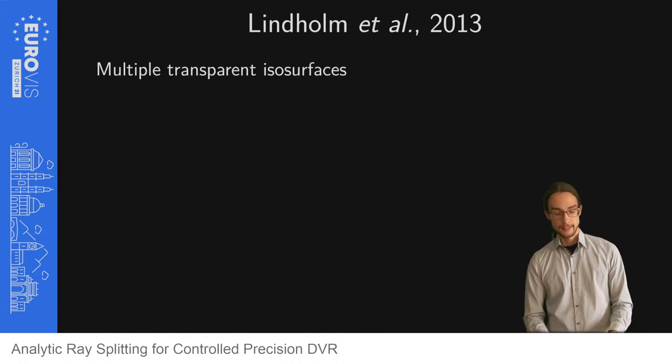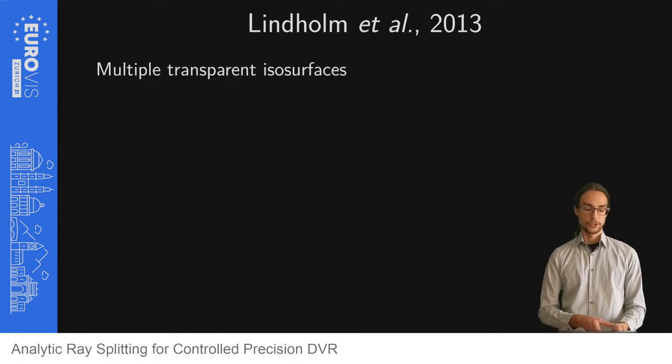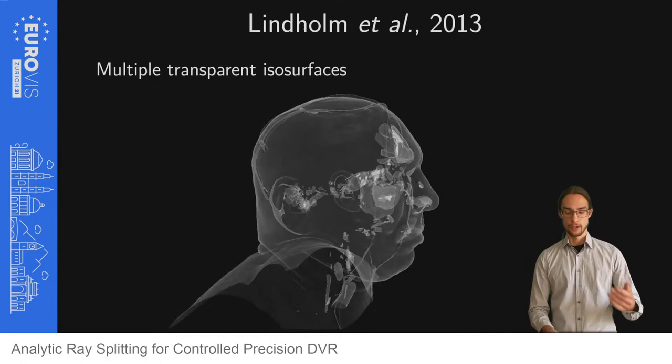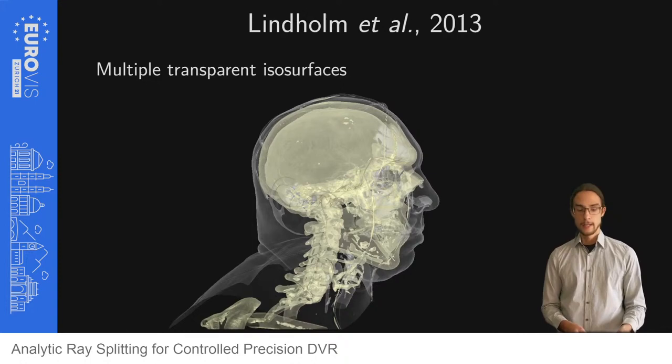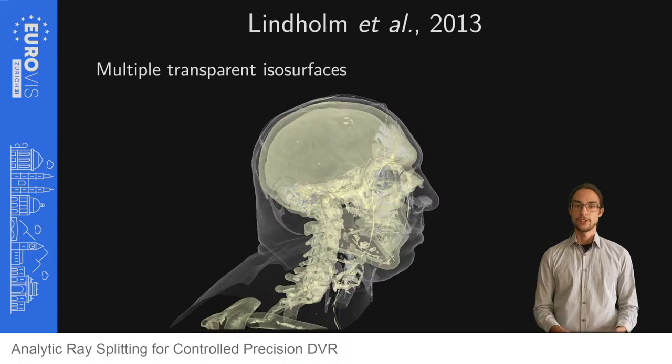Lastly, Lindholm et al. proposed in 2013 a completely different approach to direct volume rendering. Here isosurfaces are drawn at the control points of the transfer function via marching cubes. From these isosurfaces the accumulated color is then reconstructed. This method can extract sharp peaks in the transfer function very well, but introduces approximation errors due to marching cubes and a linearization in the reconstruction.